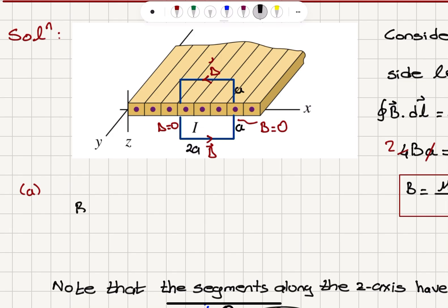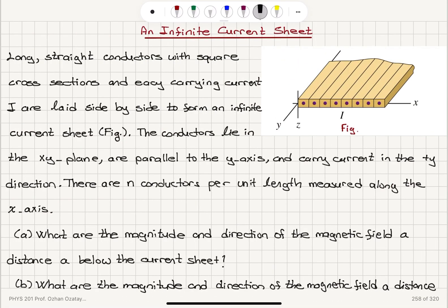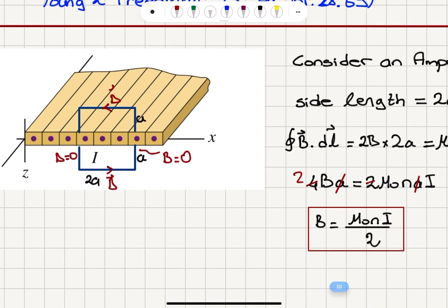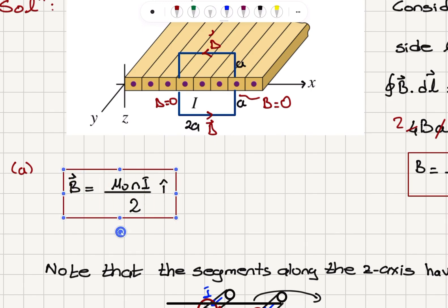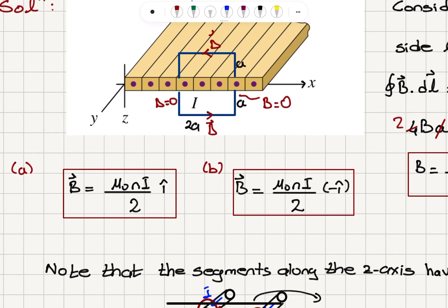Now for the direction: in Part A, we were asked to find the field below the current source. Below the current source, the magnetic field is pointing in the plus i-hat direction (the x-axis), so B equals mu zero N I over 2 in the plus i-hat direction. For Part B, above the current sheet, it is the same magnitude mu zero N I over 2, but pointing in the minus i-hat direction.